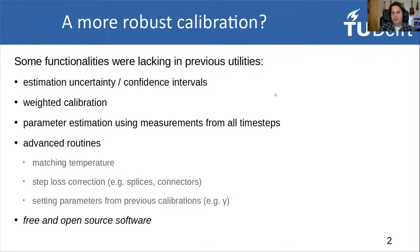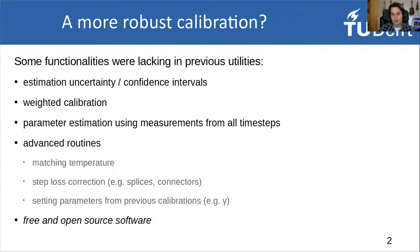Our issue was that we wanted a more robust calibration and some functionalities that were lacking in previous utilities. First, the estimate of uncertainty along your cable and in time, which translates to confidence intervals of temperature as well. You can use this information to do a weighted calibration. We want to estimate these parameters using measurements from all time steps — not just calibrating each single measurement in time separately, but all together. We also need some advanced routines to correct for step losses. And lastly, we wanted this to be free open source software, available online for everyone to use, modify, or integrate in their own routines.